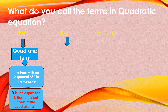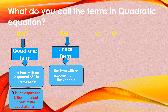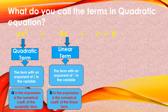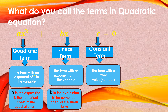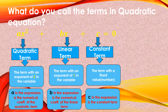Next, what is BX as our second term? This is what we call the linear term. When can we say a term is linear? If the highest exponent of the variable is 1. So the linear term has an exponent of 1 in the variable. B is the numerical coefficient of the linear term. And C is said to be the constant term — it is a number with a fixed value. So do not forget: AX squared plus BX plus C equals 0 is the standard form of a quadratic equation.